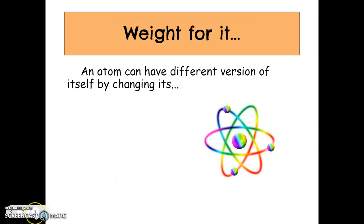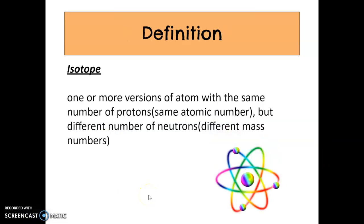An atom can have different versions of itself. Just because it's an atom of gold, copper, or carbon, it doesn't mean it's necessarily identical to other atoms of that element. The way that it can change is by changing its mass. The mass of the atom can change and give us something called isotopes. An isotope is one or more versions of an atom with the same number of protons — the same atomic number — but a different number of neutrons, so a different mass number.